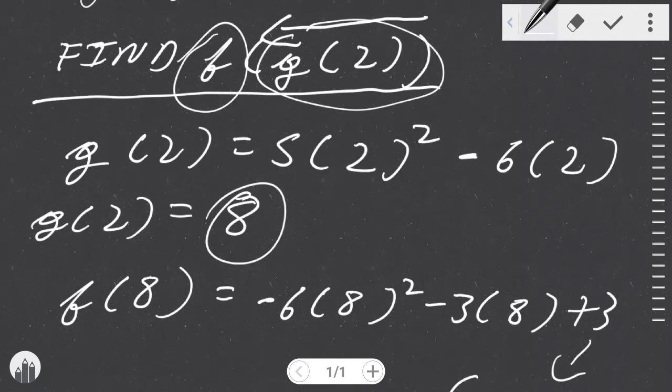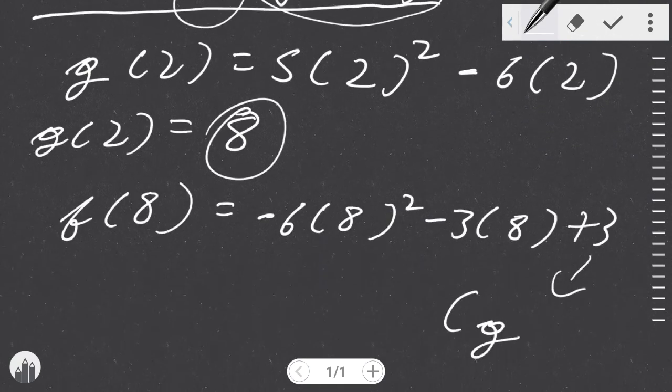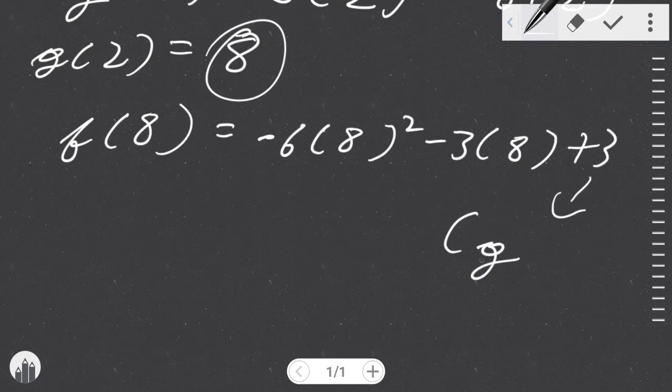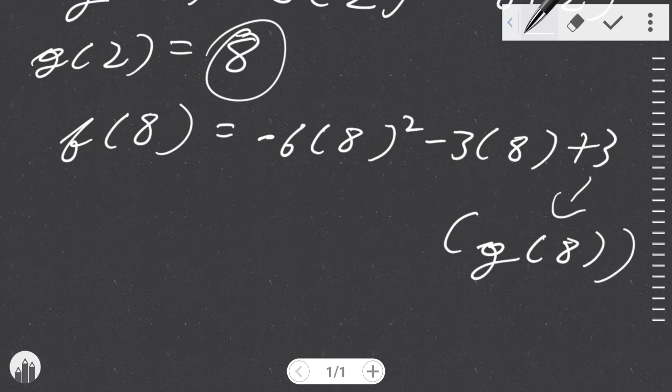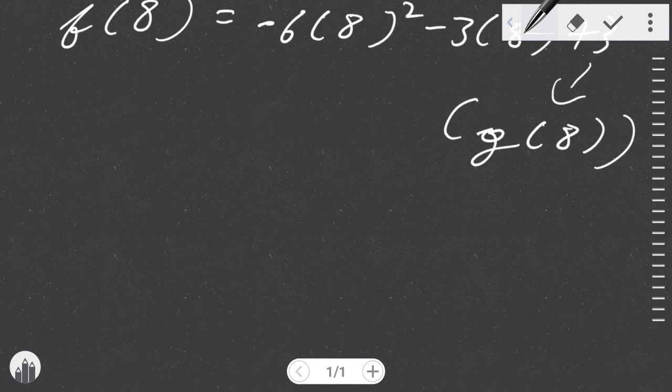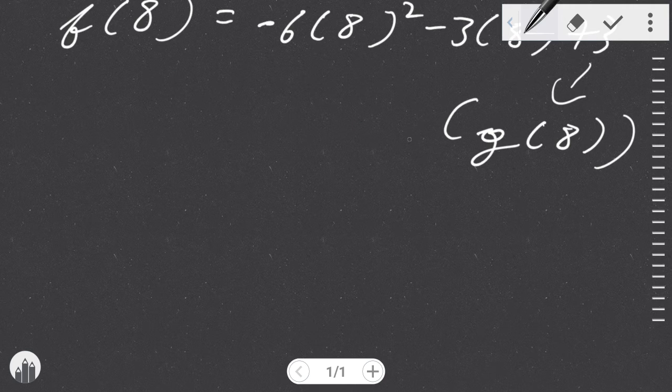Really what you do whenever you find a function inside a function formula is you literally just do g of—since we have a function of 8—we are going to substitute the t here for 8. Now it's very important here that you stop and you don't actually just keep calculating, because now what you need to do is find the new function g(8). So we're going to hold this equation for a bit and we're going to go back.